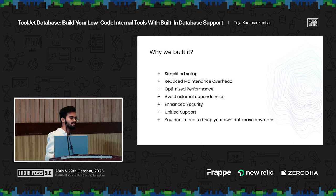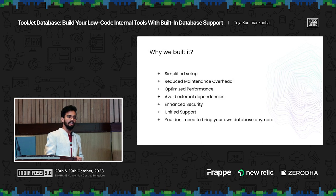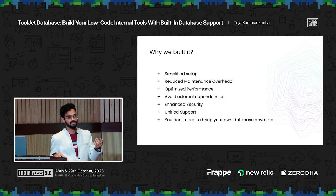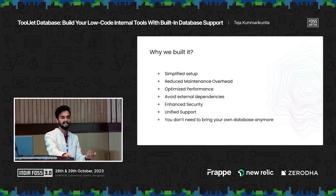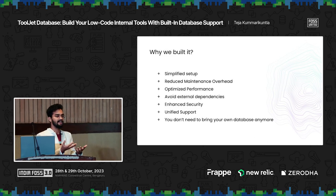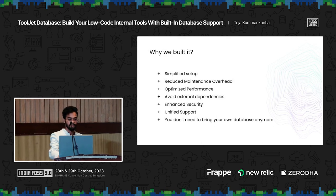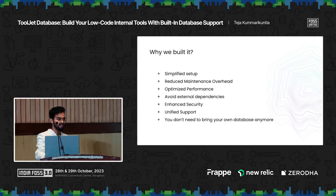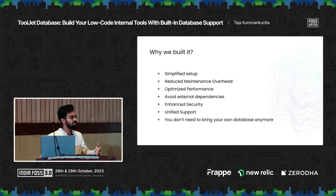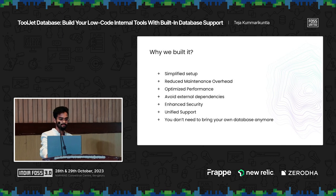Why we built it — the core of it is simplified setup. In order for you to build a ToolJet app that has a dependency on storing information, you'd essentially need to go to some integration or database, connect, and come back. But with ToolJet Database as a service built inside, you don't need to go back — you just stay inside, put it up, and that's super quick. It also means reduced maintenance overall, better performance, and unified support where you don't need to jump into different tools. You don't need to bring your own database anymore.